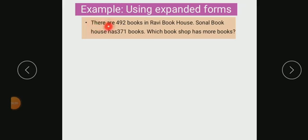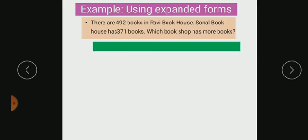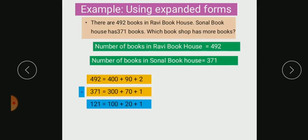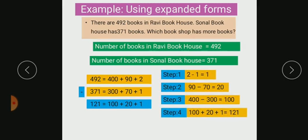Now, there are 492 books in Ravi Book House. Sonal Book House has 371 books. Which book shop has more books? So first we should write the numbers in expanded form.